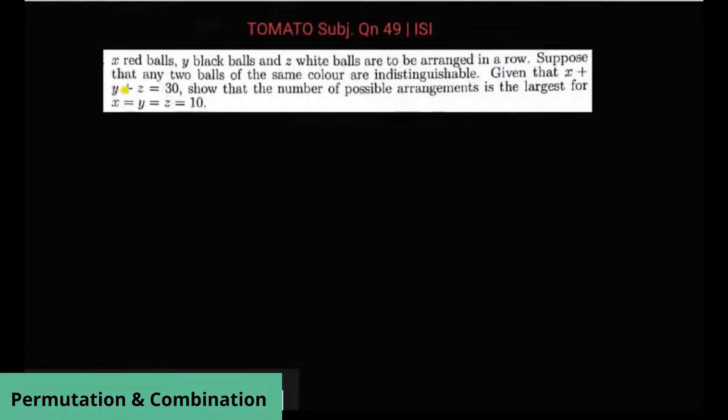The question is: there are x red balls, y black balls and z white balls which are arranged in a row. Suppose that any two balls of the same color are indistinguishable - I mean they all are of similar type.